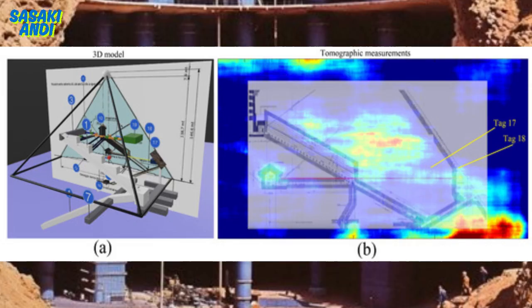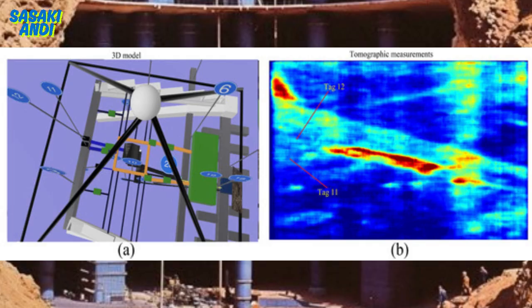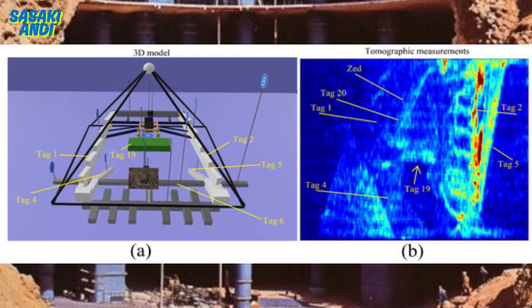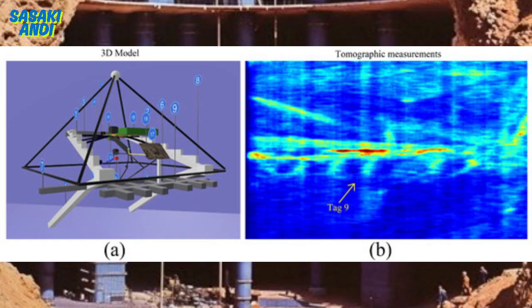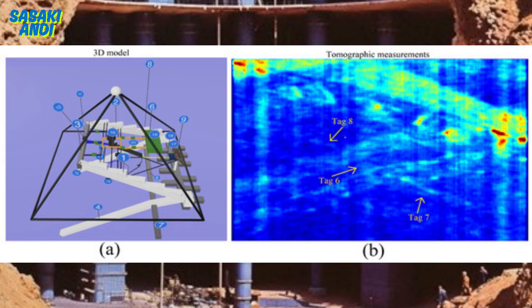So let's recap. What are the biggest takeaways from this deep dive? Well, we've learned that the Great Pyramid, and possibly other Giza pyramids, might actually be eight-sided, not four-sided. We've also discovered this intricate network of previously unknown ramps, corridors, voids, and underground complexes that hint at a much more complex purpose than just a tomb.